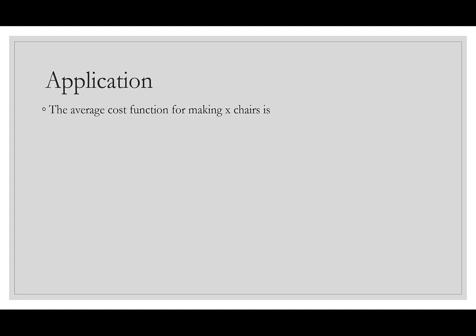Let's try an application. The average cost for making x chairs is c̄(x) = (35x + 8000)/x. We find the limit as x → ∞ of c̄(x). The powers are the same — 35x on top and x on the bottom — so 35/1 = 35.